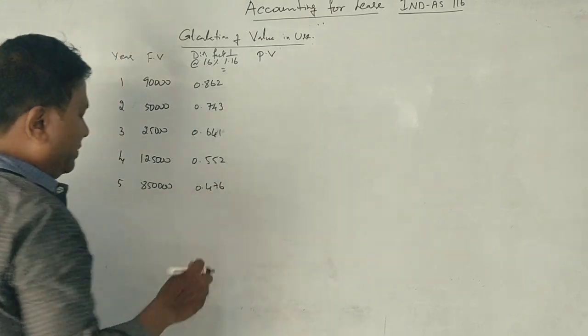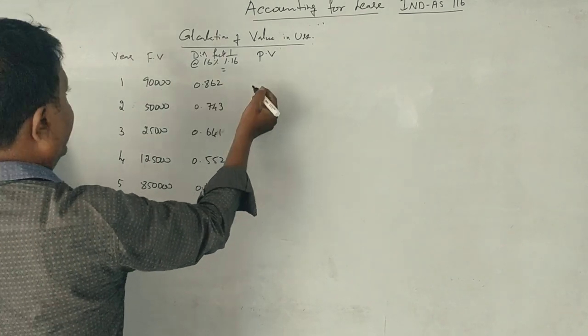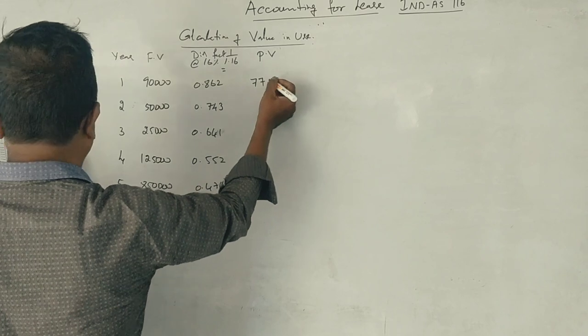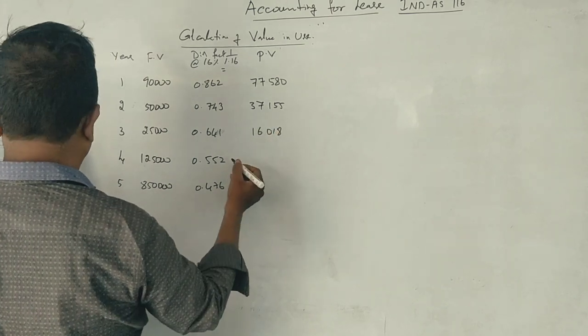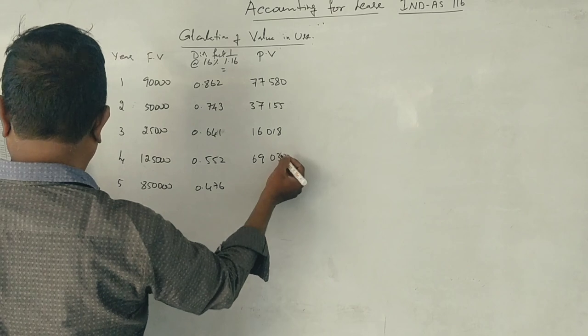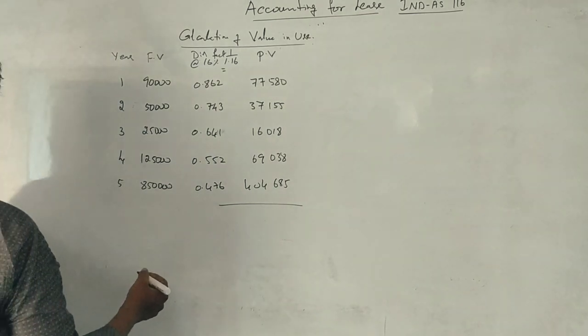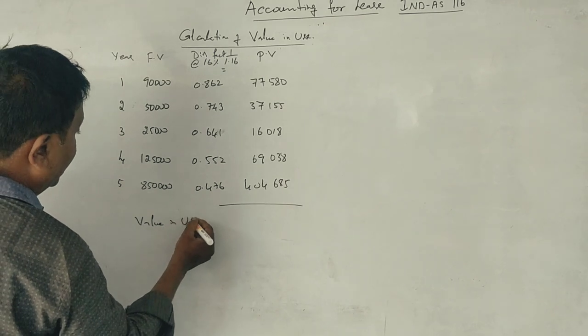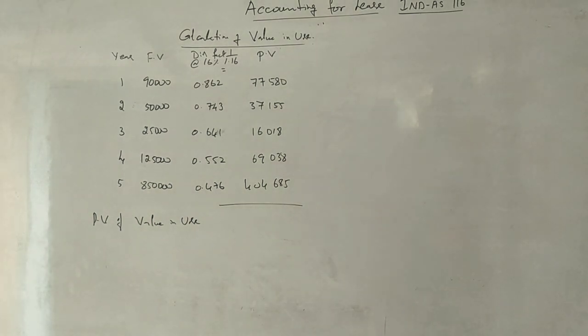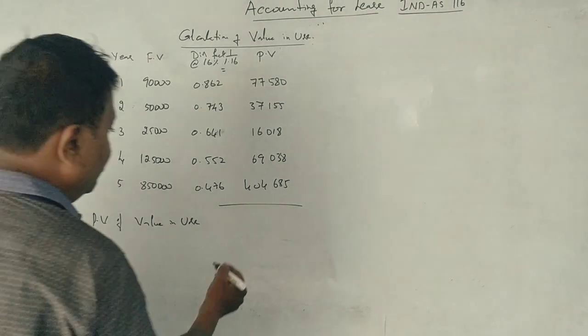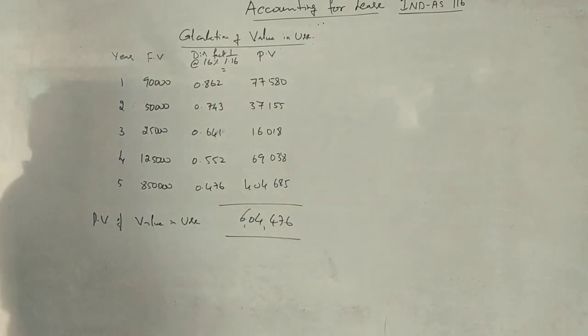Present value is 90,000 into 0.862 equals 77,580, then 37,155, 16,018 rupees, 69,038 rupees, and 4,44,685 rupees. This is the total value in use. The total value in use is 6,04,476.